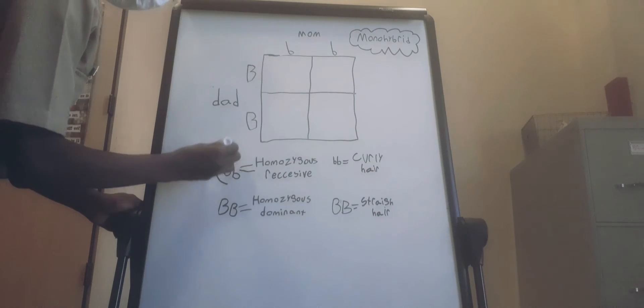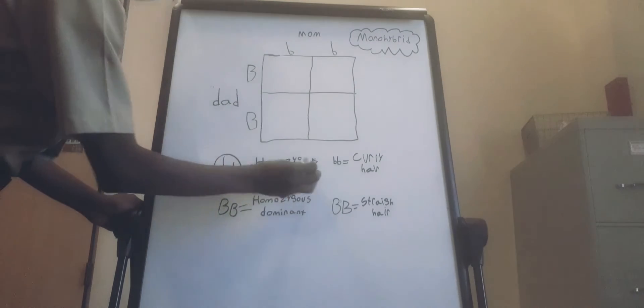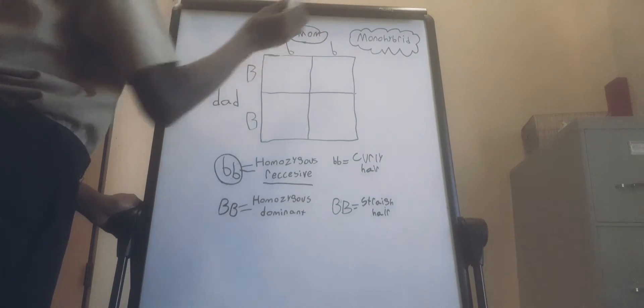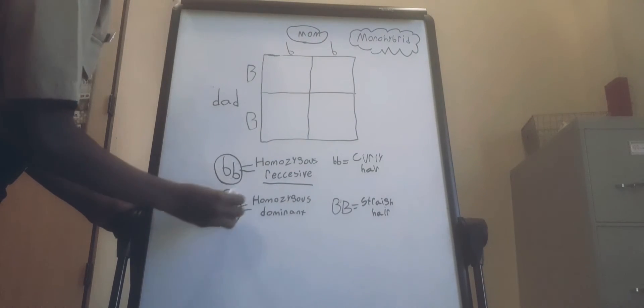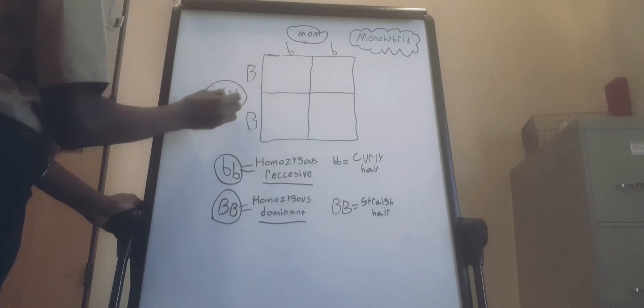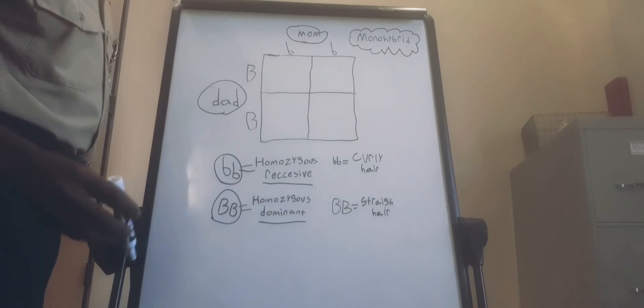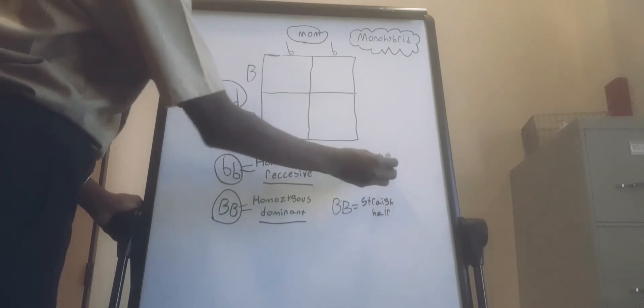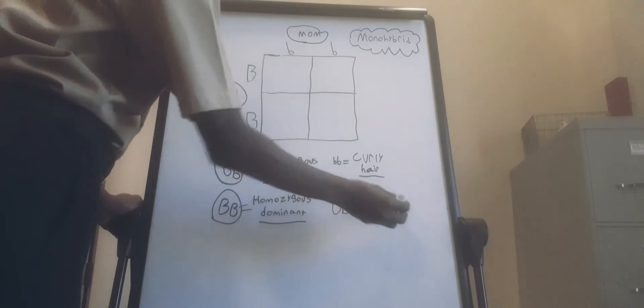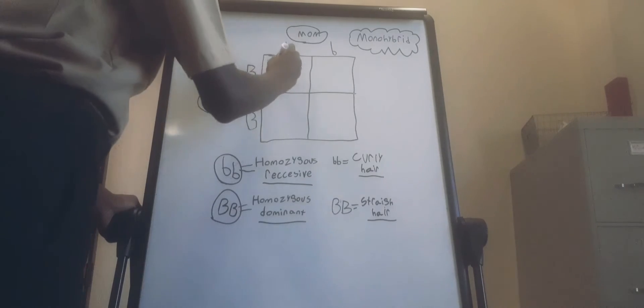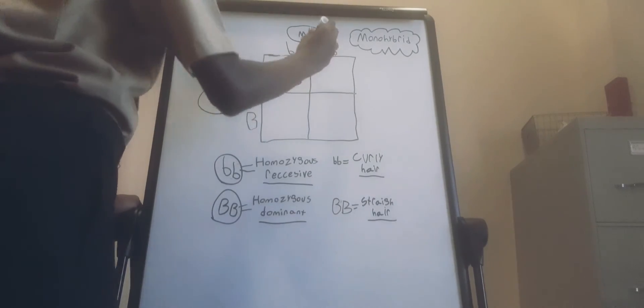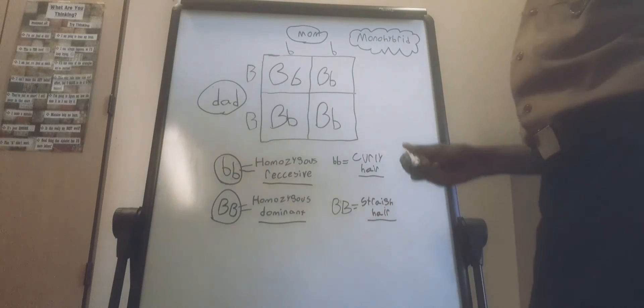The small b, which is homozygous recessive, on the top of the square is the mother's side. And the big B, which is homozygous dominant, on the left side, is the father's side. The homozygous recessive represents curly hair, and the homozygous dominant represents straight hair. My dad has straight hair genes, and they are a dominant trait in me. But since the recessive curly hair gene that my mom has hasn't shown in me, it seems like the straight hair gene is more dominant in me.